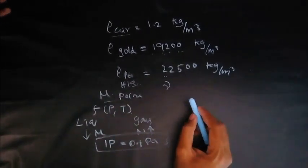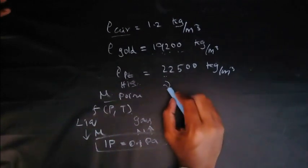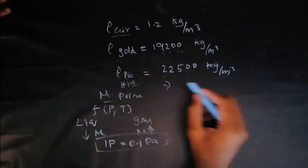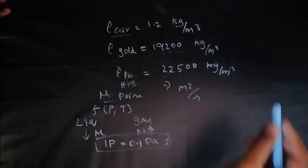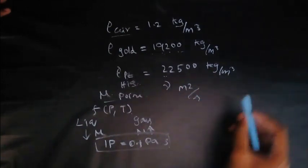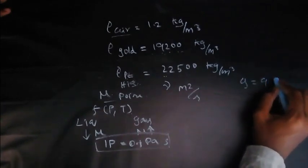Next is kinematic viscosity. Kinematic viscosity is denoted by this little mu. Unit is meter square per second.